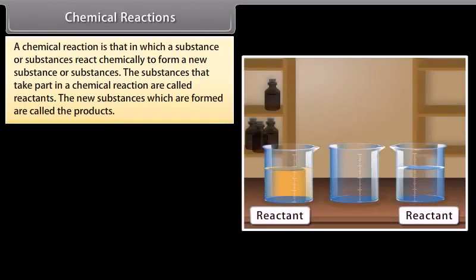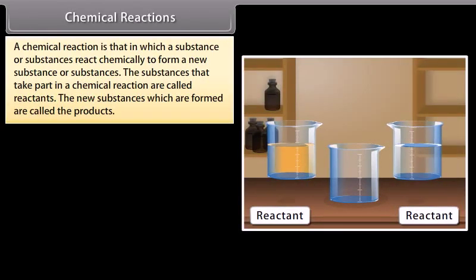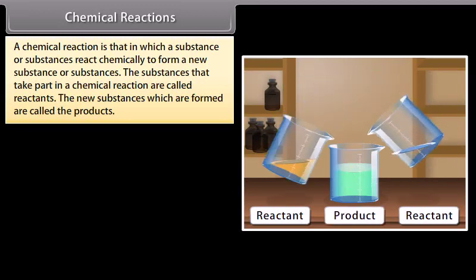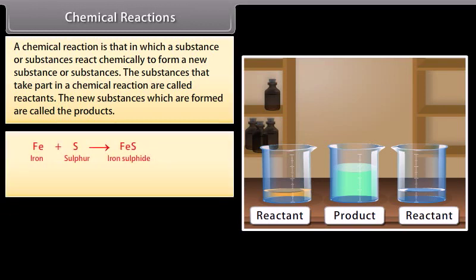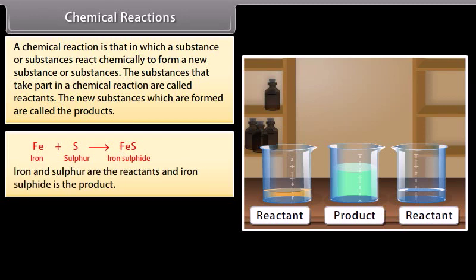A chemical reaction is that in which a substance or substances react chemically to form a new substance or substances. The substances that take part in a chemical reaction are called reactants. The new substances which are formed are called the products.